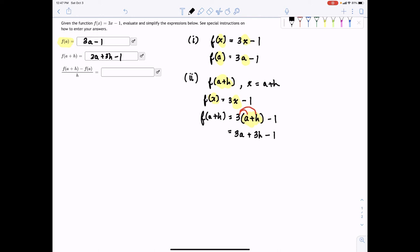Alright, so the last part is to now apply the difference quotient. So now what we want to do is have f(a+h) minus f(a) all over h. And so we have all these pieces, right? So we have f(a) is here and f(a+h) is there. So let's go ahead and write this out.